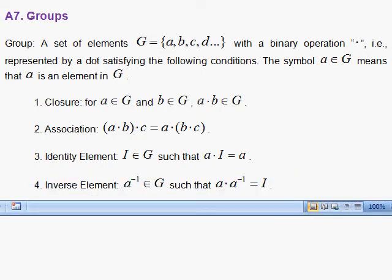Inverse element is the fourth property. An inverse element, A with the superscript minus one, is an element of the group G such that when you take the binary operation of A with the inverse of A, you get the identity element.